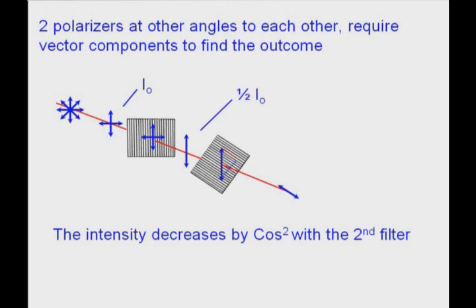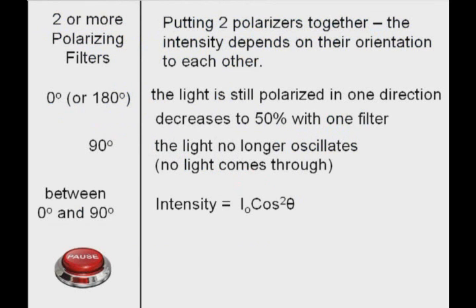The intensity after the first filter is one half I0, because half of the light is being filtered out. And then the intensity through the second filter is a cosine squared times the intensity that it was getting hit with. Pause and copy.